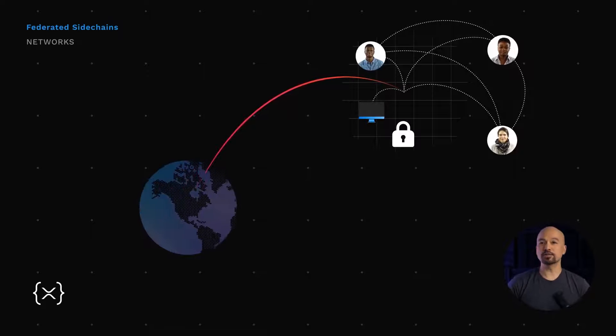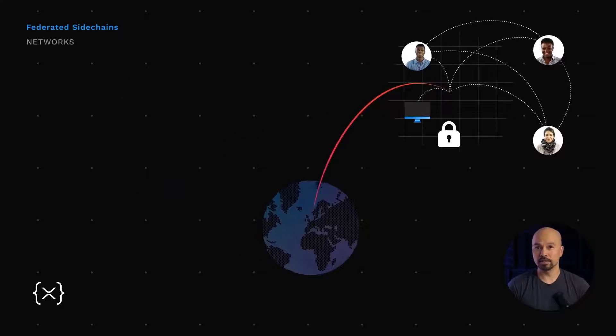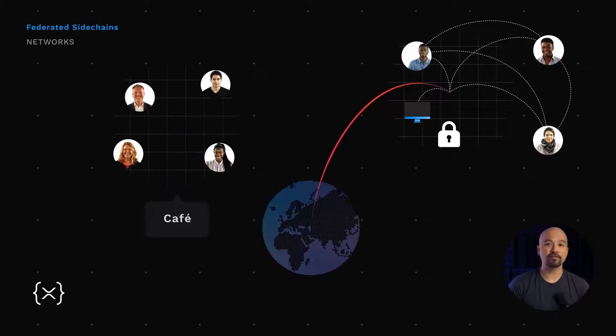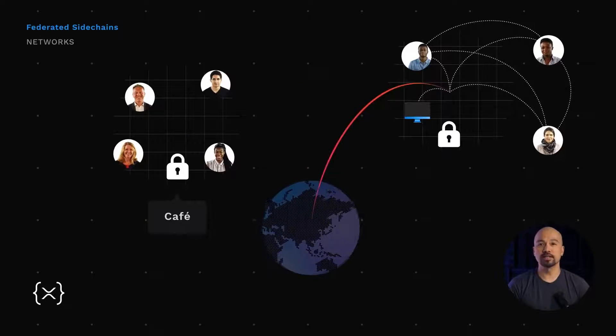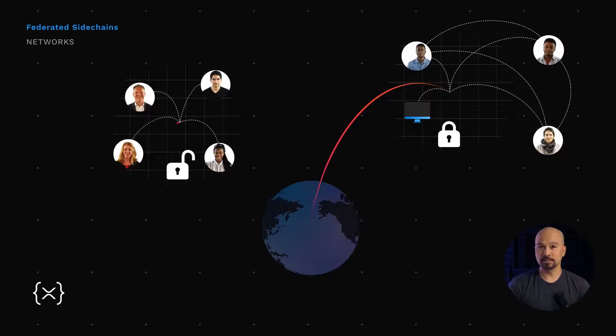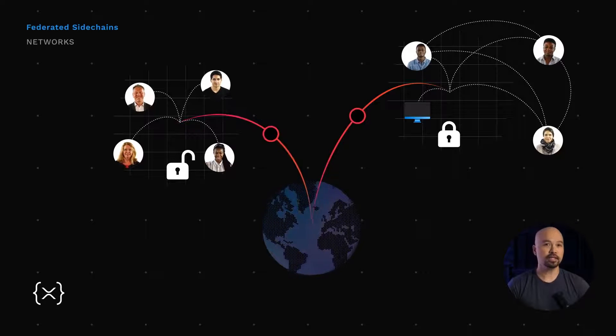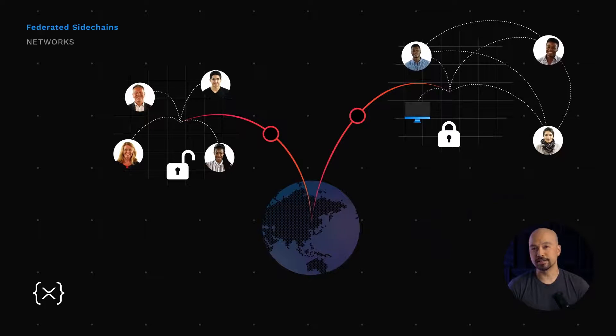A sidechain can also run more like a public network — a network at a cafe, for example — which could be open and permissionless. And in each case, there's a router which, like a federator, connects these networks to the wider internet. The purpose across all of it is the same — transferring data — but with variations in how they function depending on the needs of the users.